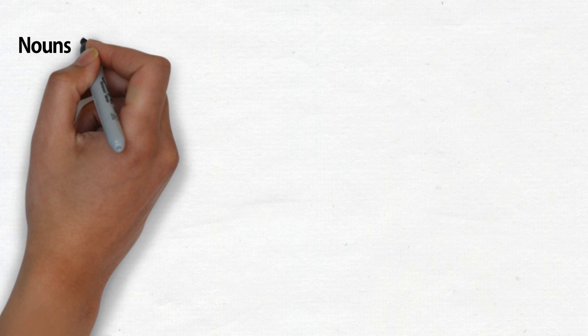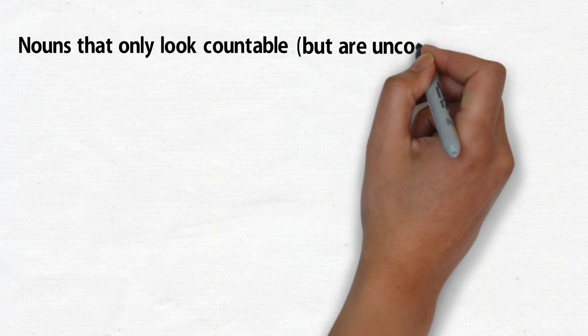Also, some uncountable words can be tricky to understand because they look countable but they're not. For example, bread and chocolate. Yes, they do look like something that you can count, but in the English language they are treated as uncountable nouns. So right now you're looking at a loaf of bread and a bar of chocolate.